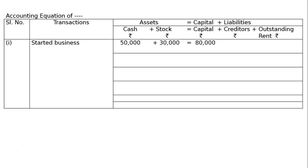Transaction two: purchased goods for cash rupees 30,000 and on credit rupees 20,000. Cash is reduced by 30,000, stock increases by 50,000 total, and creditors increase by 20,000 — because we are buying on credit, those from whom we purchase goods on credit are our creditors. So creditors increased by 20,000, stock increased by 50,000, and cash went down by 30,000.